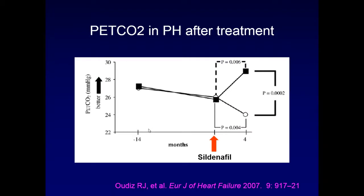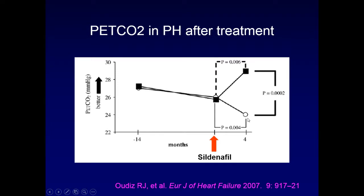In a 2007 study examining the effect of treating pulmonary hypertension: improving end-tidal CO2 correlates with better outcomes, and giving patients something that reduces their vascular pressure actually increases end-tidal CO2. In contrast, individuals who received placebo had a continued decline in end-tidal CO2 over time.